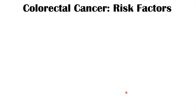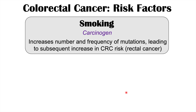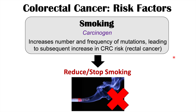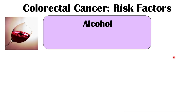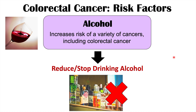Now let's talk about modifiable risk factors. One is smoking — smoking exposes the patient to many carcinogens, increasing the number and frequency of mutations, leading to increases in colorectal cancer, especially rectal cancer. It also increases the risk of many other types of cancers. Another modifiable risk factor is alcohol use. Even mild or moderate use of alcohol increases the risk of a variety of cancers, including colorectal cancer, so it's important to reduce or stop drinking alcohol.